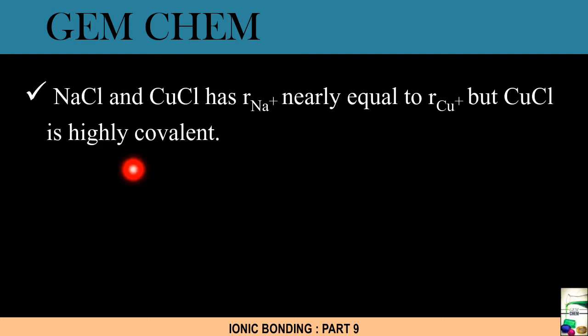Now from here only we can say that NaCl and CuCl has the radius of the cations nearly equal, but CuCl is highly covalent because we know that Cu (copper) is a transition metal, as a result of which it has d electrons. So it has more covalent character.